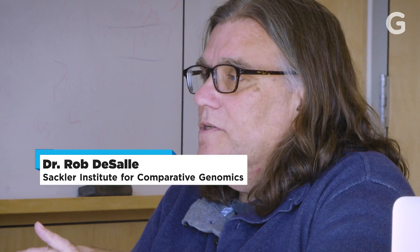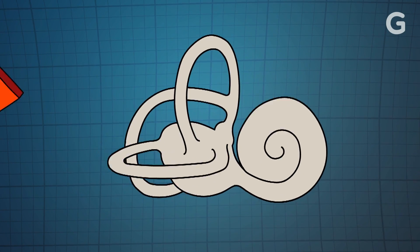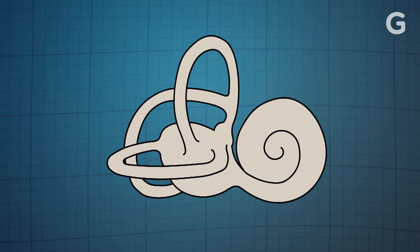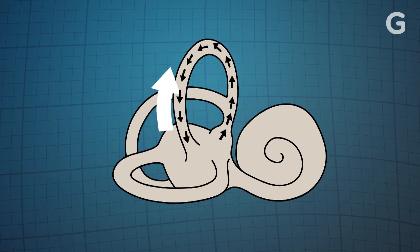It's actually kind of a three-dimensional coordinate system. Your semicircular canals, and there's three of them. One on the x-axis, one on the y-axis, and one on the z-axis. If you tilt your head this way, the fluid will go this way, and it'll pull the hairs this way, and that's sending signals to your brain, telling you where you are in space.